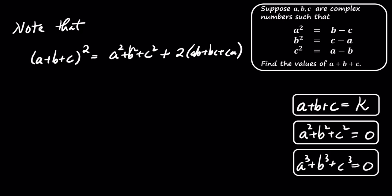Since A squared plus B squared plus C squared is 0, the sum of the products AB, BC, and CA equals k squared divided by 2.